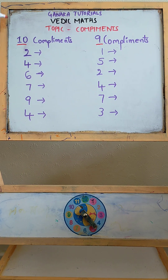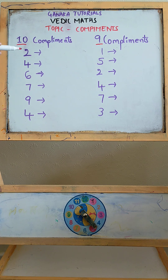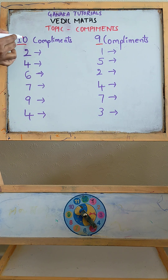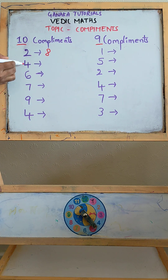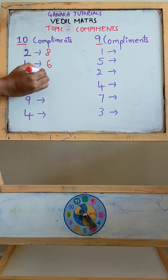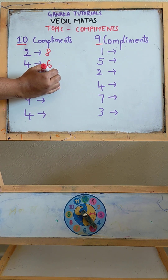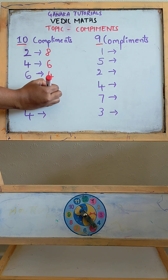Now we will find the complements for base 10. The complement of 2 is 8 because 10 minus 2 is 8. For 6, it is 4 because 10 minus 6 is 4. For 7, it is 3.